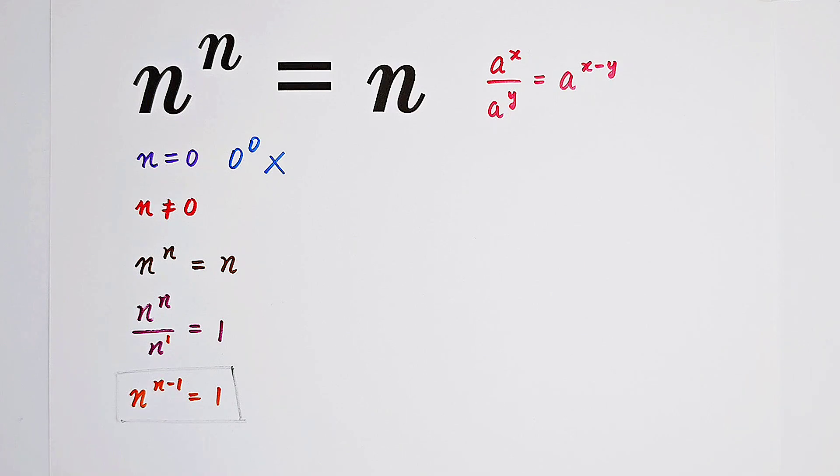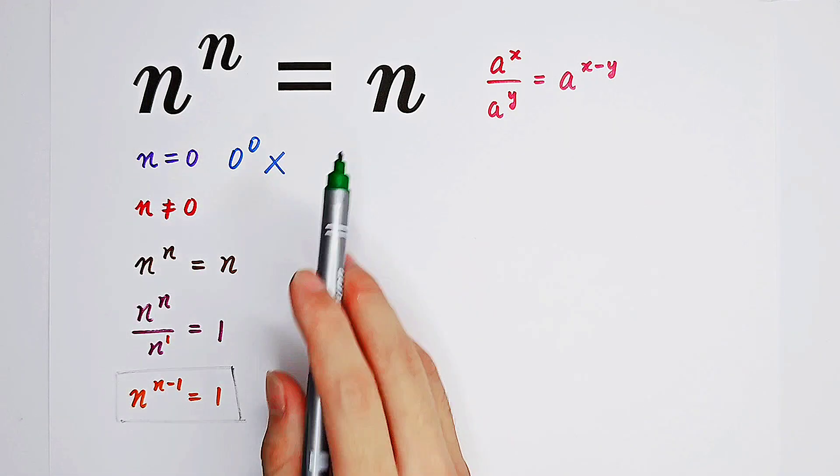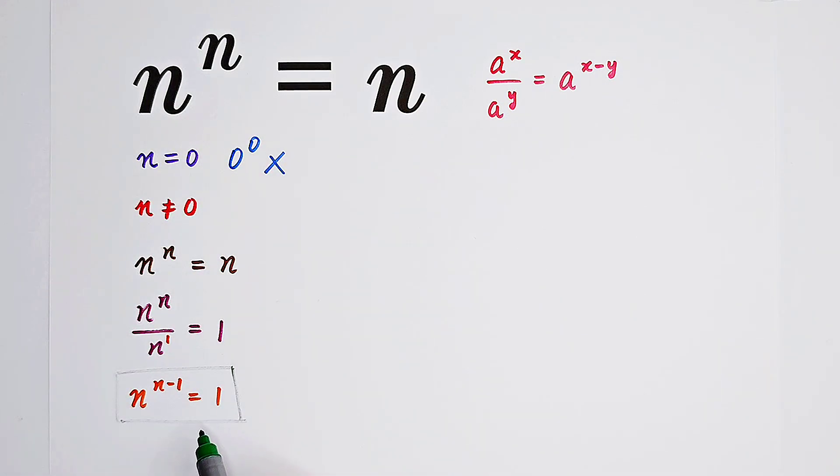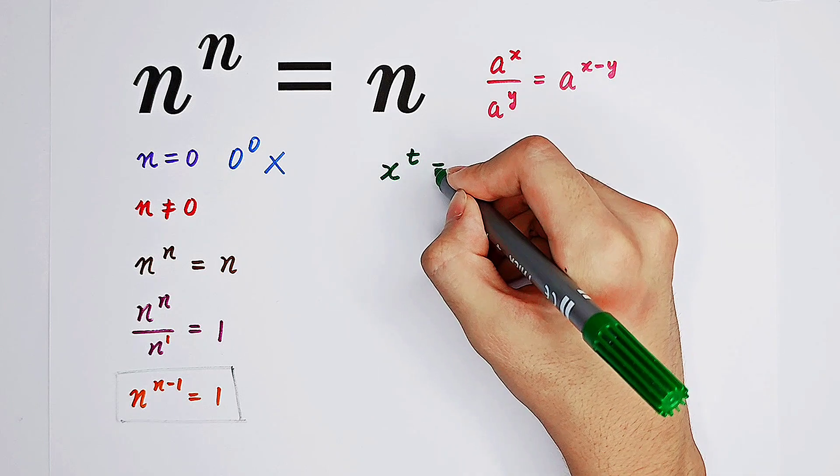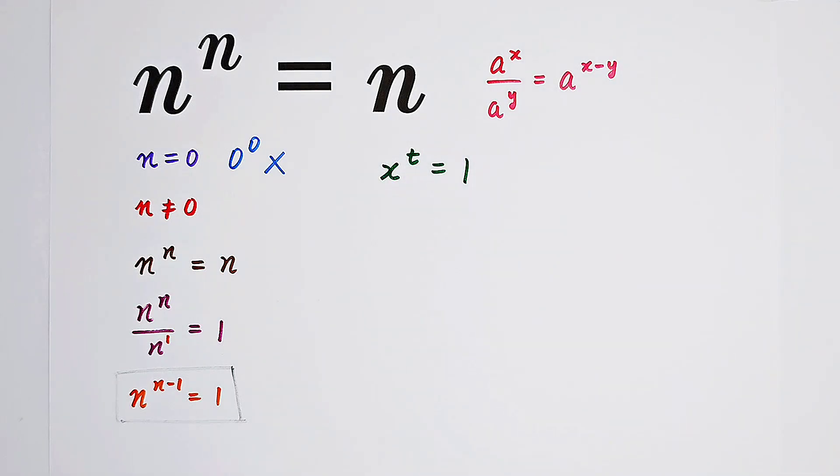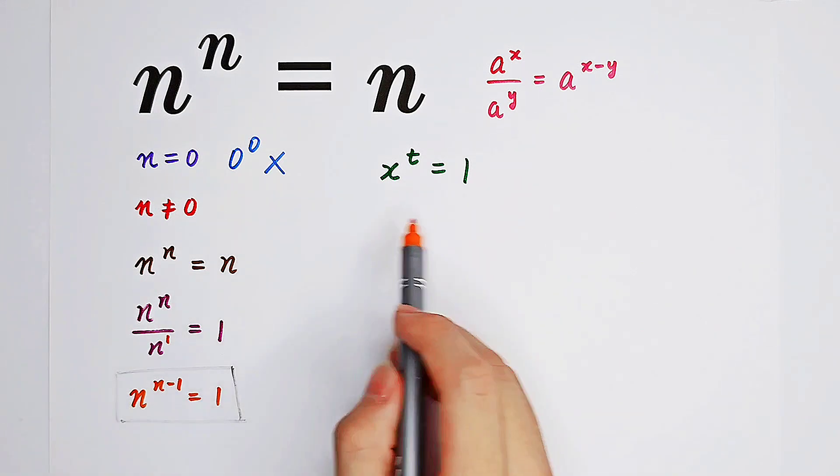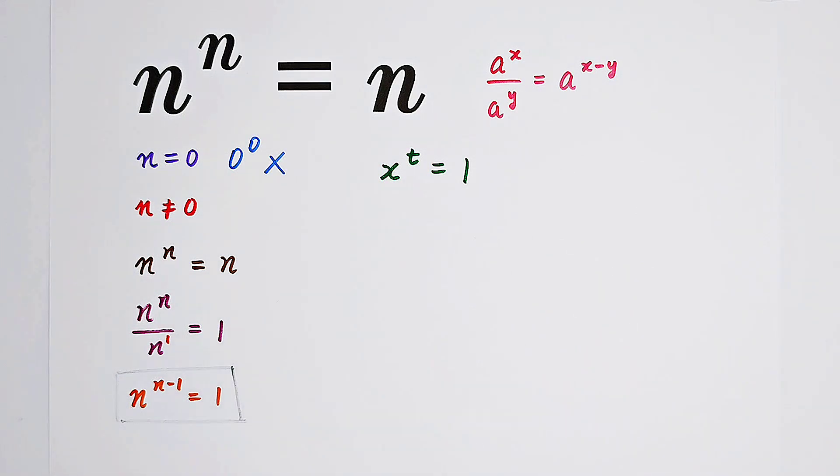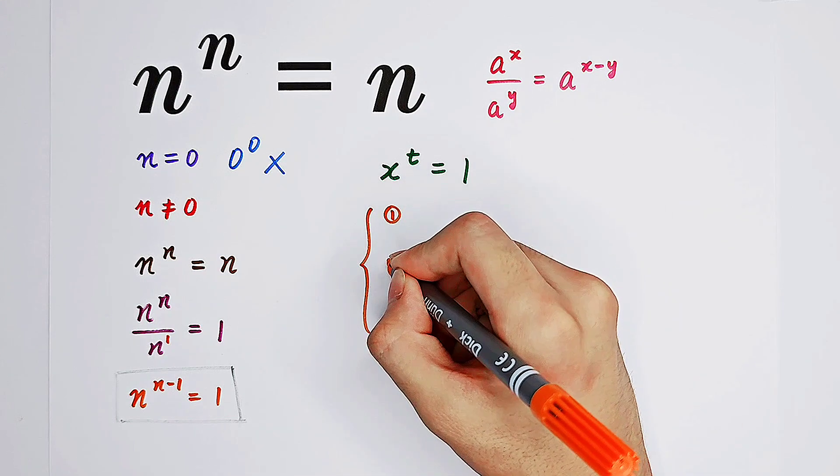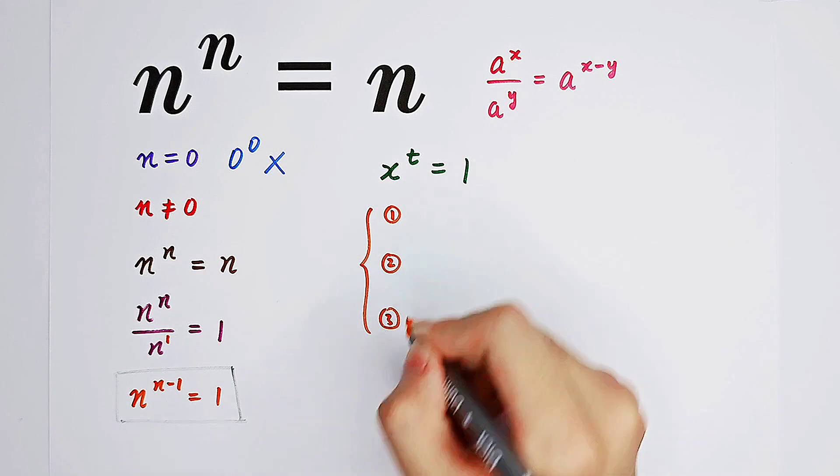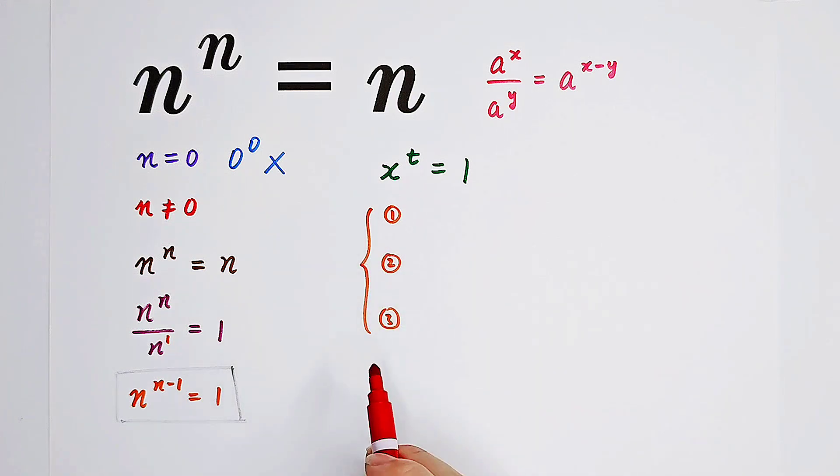It's not easy. We've successfully reformed the equation because this equation has the form x to the power of t equals 1. So our main job is actually dealing with this kind of equation. Now we have three cases. In general, these three cases have to be discussed one by one.